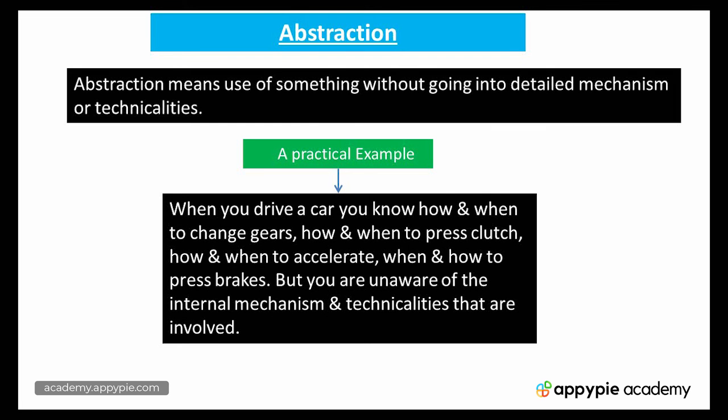The fourth and last one is abstraction. This is also a very important feature of object-oriented programming. Abstraction means use of something without going into the detailed mechanism or technicalities. For example, when you drive a car, you know how and when to change gears, how and when to press the clutch, how and when to accelerate, and when and how to press the brakes — but you are unaware of the internal mechanism and technicalities involved.